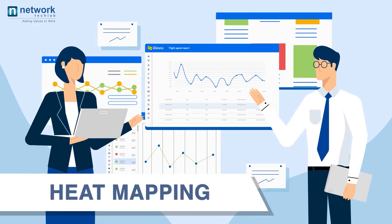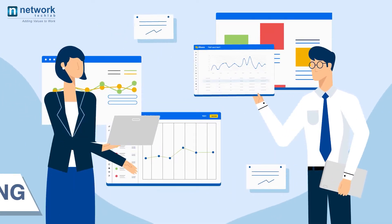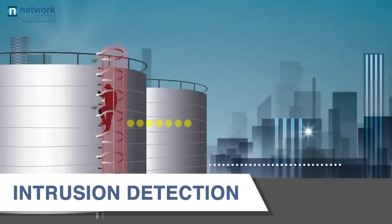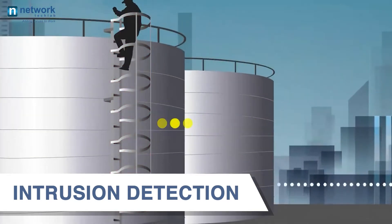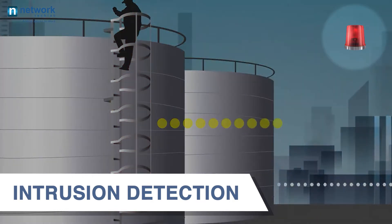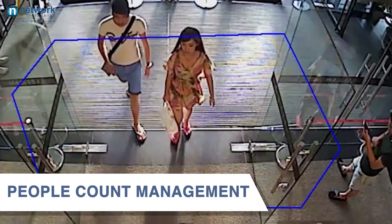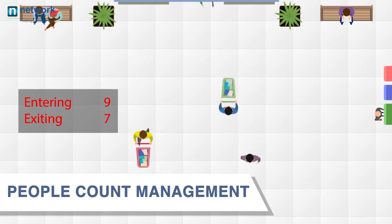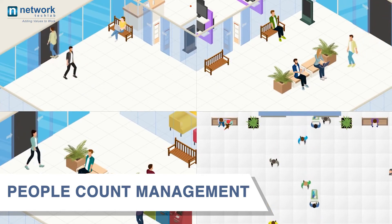Heat mapping helps in making effective business decisions based on the data offered. Next is intrusion detection, which allows organizations to detect intruders who attempt to climb over or enter unauthorized or restricted areas — automated alerts can help in avoiding misadventure. Fourth is people count management, which allows analysis of how many people are entering and exiting a specific area, helping to prevent mishaps or chaos in advance.